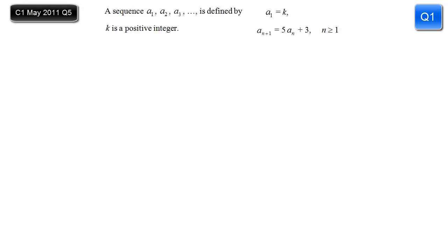This is a fairly standard C1 question on sequences and recursion relations. The first term is a constant k, a positive integer, and we have the relationship that tells us any term is given by five times the previous term plus three. Part a is straightforward: the second term is simply five times the first term plus three, so it's 5k plus three.